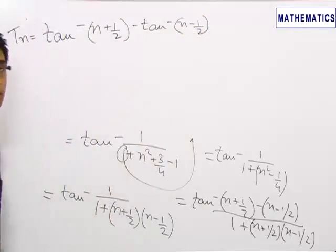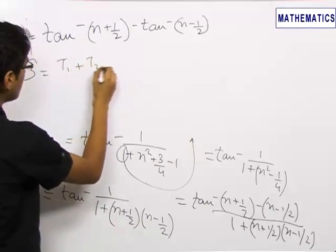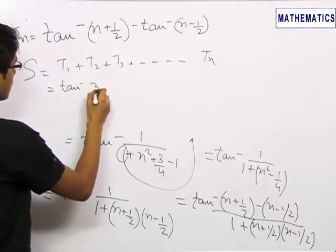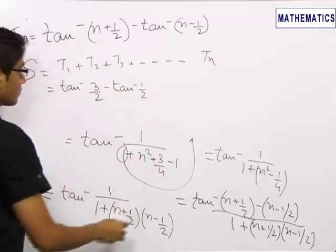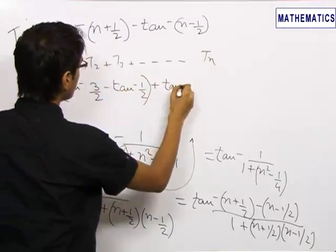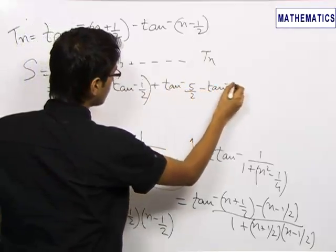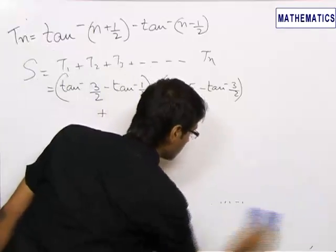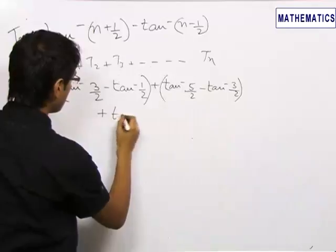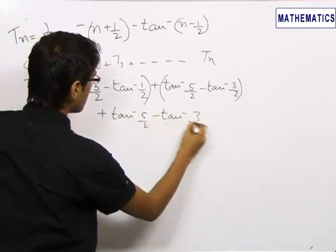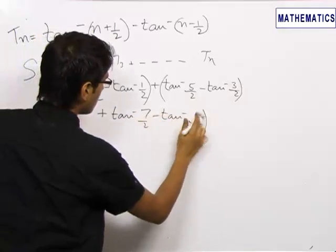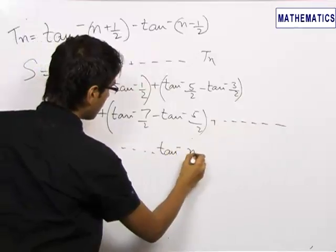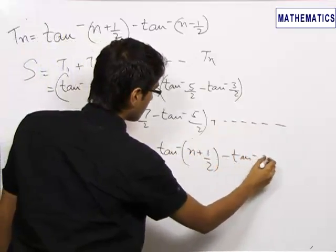This is the nth term of the series, and the sum S_n = T₁ + T₂ + T₃ + … + Tₙ. Putting n = 1, 2, 3, 4 we get: tan⁻¹(3/2) − tan⁻¹(1/2), plus tan⁻¹(5/2) − tan⁻¹(3/2), plus tan⁻¹(7/2) − tan⁻¹(5/2), and so on. The last term is tan inverse of (n + 1/2) minus tan inverse of (n − 1/2).